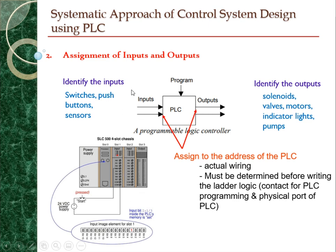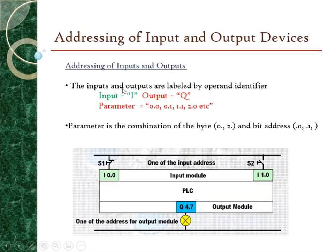Once you have identified all the inputs and outputs, you need to assign them to the addresses of the PLC, because the address determines the actual wiring that you need to connect between your PLC and your external devices. This address must be determined before writing the ladder logic diagram, as it will define the contacts for PLC programming. The PLC has I/O ports assigned to addresses in the PLC memory, so you need to know which port is connected to which external device before you can assign inputs and outputs in your ladder logic diagram.